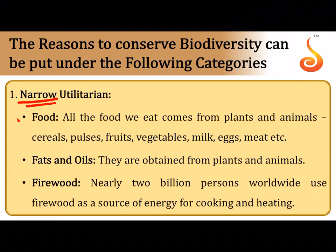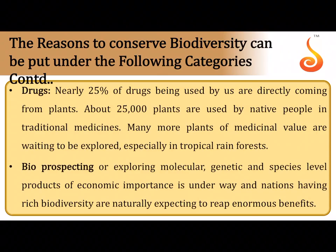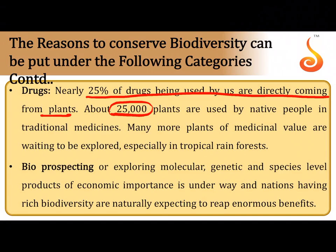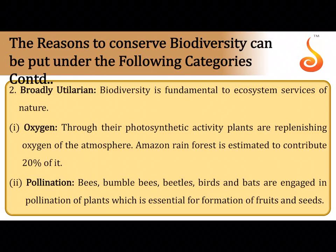Why should we conserve biodiversity? The narrowly utilitarian argument says we should conserve nature because we get food, fats and oils, firewood, timber, fibers, and industrial products from it. Nearly 25 percent of drugs being used come directly from plants, and about 25,000 species of plants are used by native peoples for traditional medicines. The science of exploring molecular, genetic, and species-level diversity for products of human importance is called bioprospecting. However, this is a selfish view — conserving nature only because it gives us economic benefits.